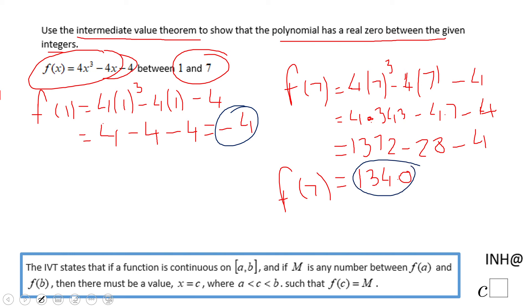That means somewhere between 1 and 7, this function will equal zero. So it's going to have a zero between 1 and 7. We don't know exactly where, but for sure between 1 and 7 we have at least one zero because of this change from negative to positive.